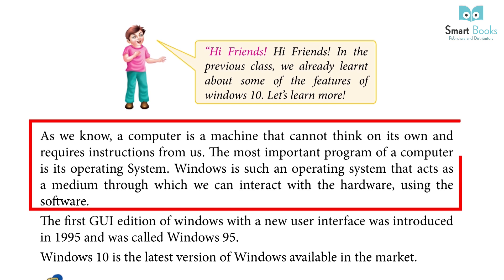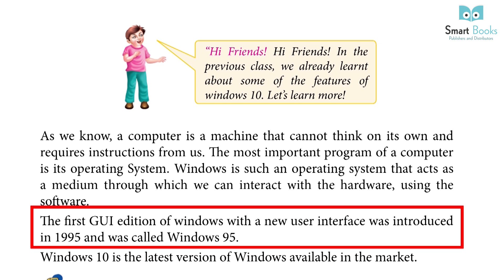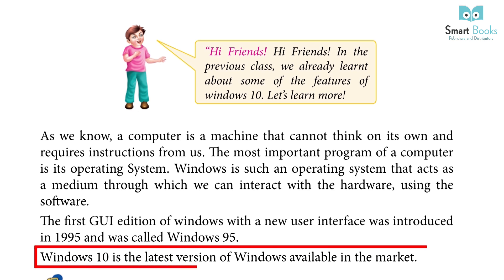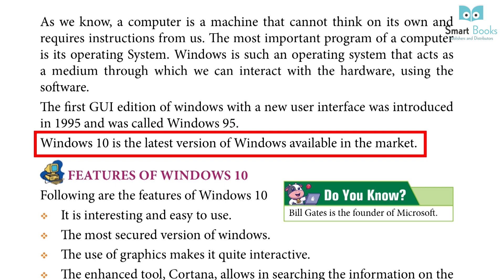As we know, a computer is a machine that cannot think on its own and requires instruction from us. The most important program of a computer is its operating system. Windows is such an operating system that acts as a medium through which we can interact with the hardware using the software. The first GUI edition of Windows with a new user interface was introduced in 1995 and was called Windows 95. Windows 10 is the latest version of Windows available in the market.